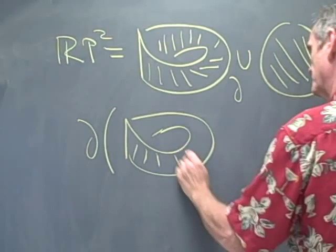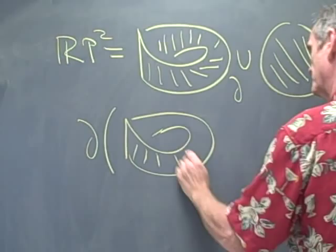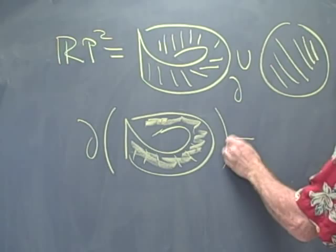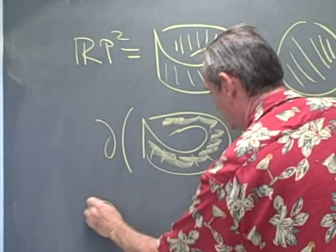maybe we'll shape that like this, is a circle, and the boundary of a disc is also a circle.